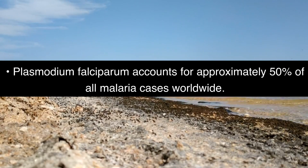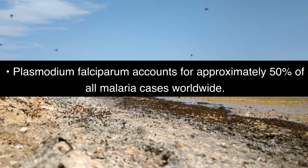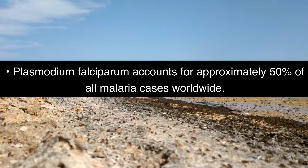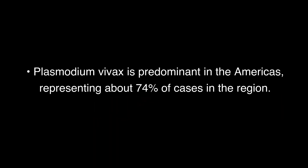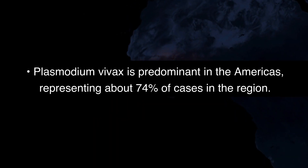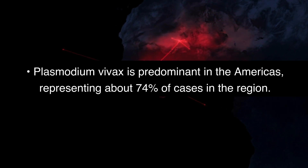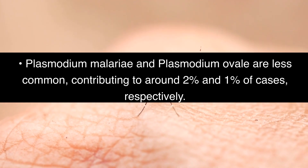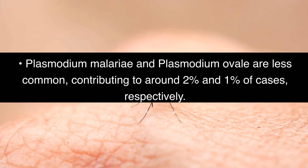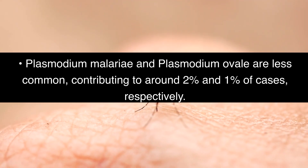Statistics: Plasmodium falciparum accounts for approximately 50% of all malaria cases worldwide. Plasmodium vivax is predominant in the Americas, representing about 74% of cases in the region. Plasmodium malariae and Plasmodium ovale are less common, contributing to around 2% and 1% of cases, respectively.